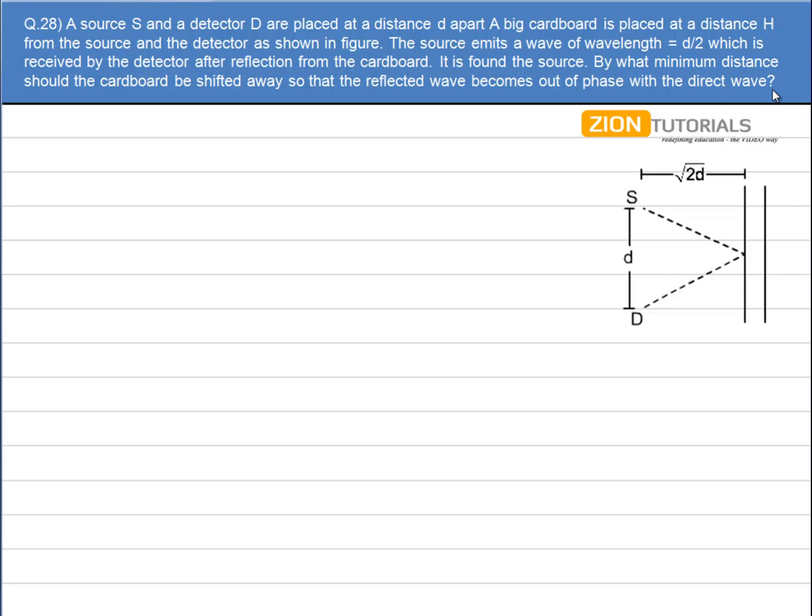A source S and a detector D are placed at a distance D apart. A big cardboard is placed at a distance H from the source and the detector as shown in the figure. The source emits a sound wave of wavelength D/2 which is received by the detector after reflection from the cardboard.